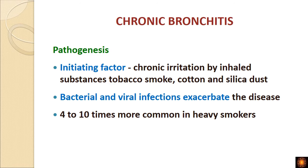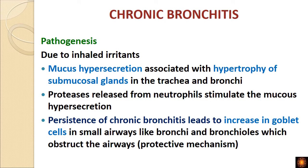In the pathogenesis of chronic bronchitis, there are factors which initiate the process, and once started, bacterial and viral infections maintain and exacerbate the disease. The initiating factors are dust, tobacco smoke, or occupational dust exposure — whatever is inhaled starts the inflammatory process. This condition is four to ten times more common in heavy smokers.